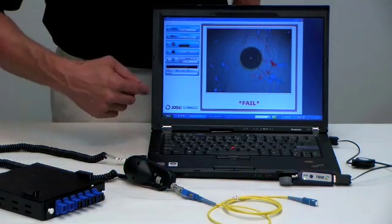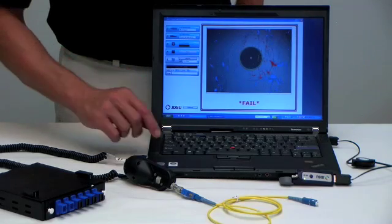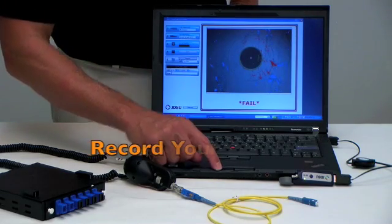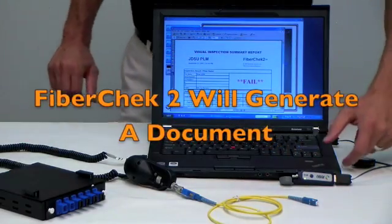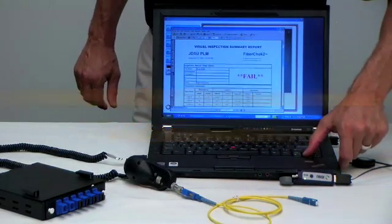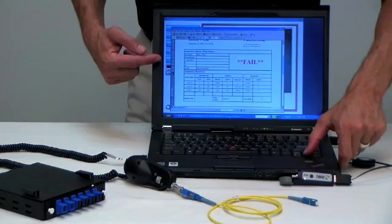Once we have an inspection result, we can record it by hitting the report button. FiberCheck2 will generate a document that records the condition of this optical fiber.